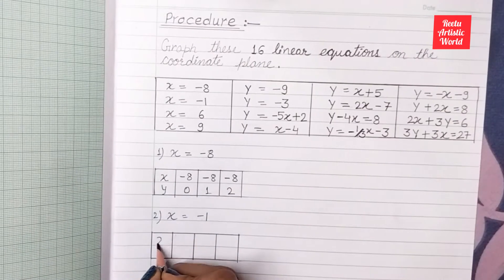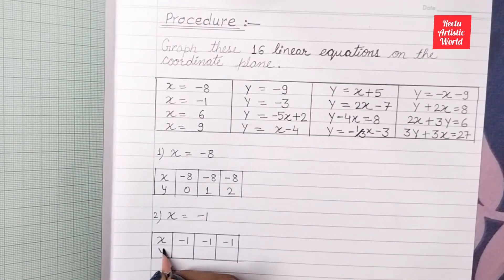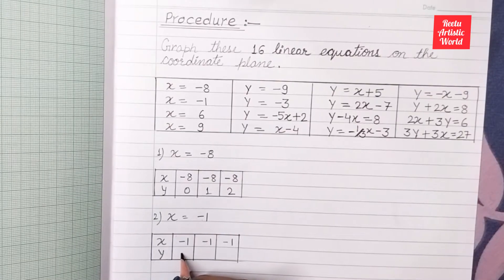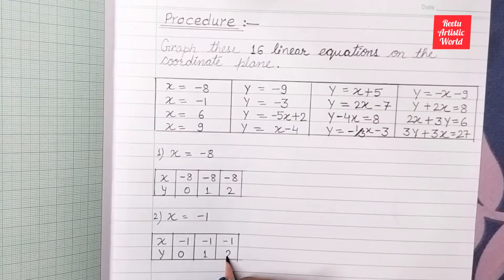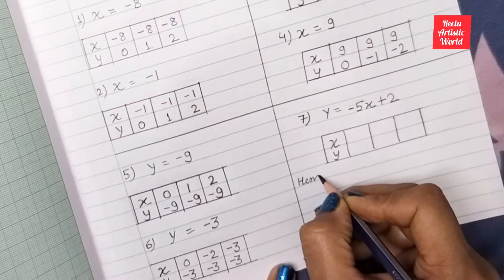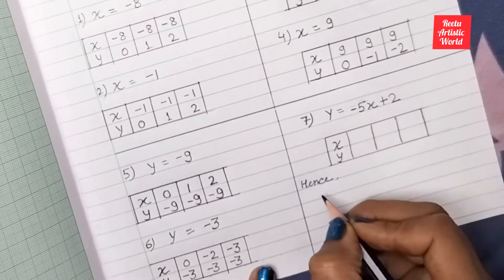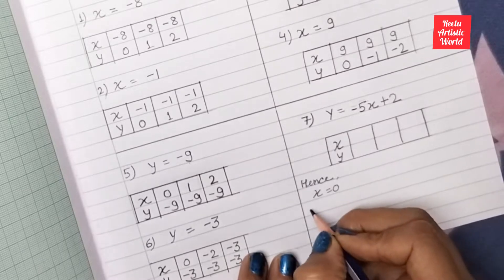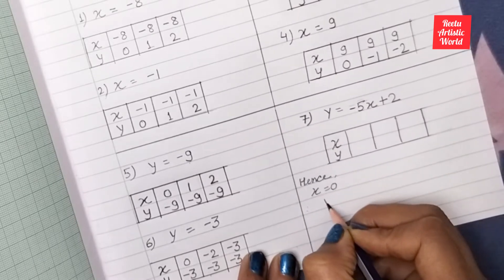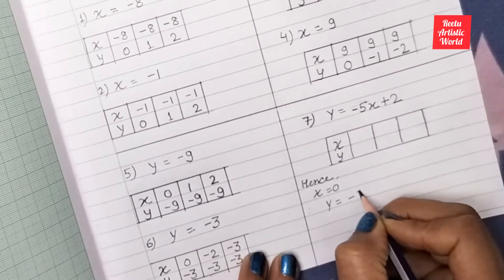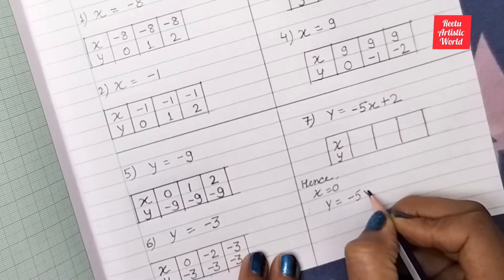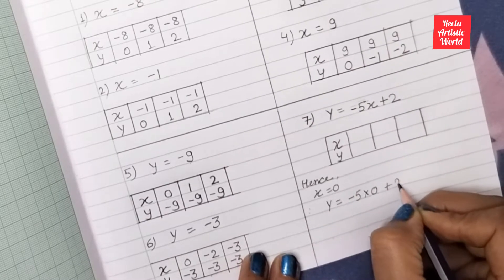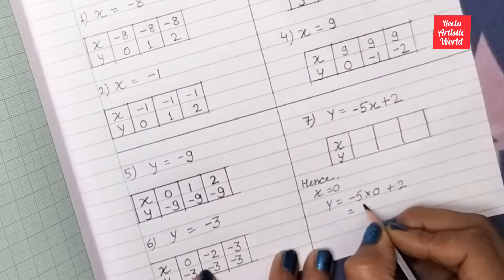In the second equation x is equal to minus 1, then we assume y is equal to 0, 1, and 2. In this equation suppose x is equal to 0, then y is equal to minus 5 into 0 plus 2 is equal to 2.